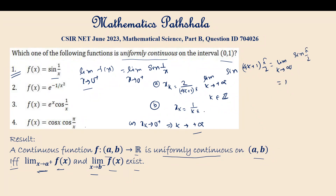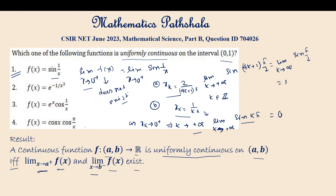Along the second path, the limit as k → +∞ of sin(1/x_k) = sin(kπ) = 0. So along one path we get limit 1, and along the other path we get limit 0. Therefore, the limit as x → 0⁺ of f(x) does not exist, which means f(x) = sin(1/x) is not uniformly continuous on (0, 1). Option 1 is wrong.